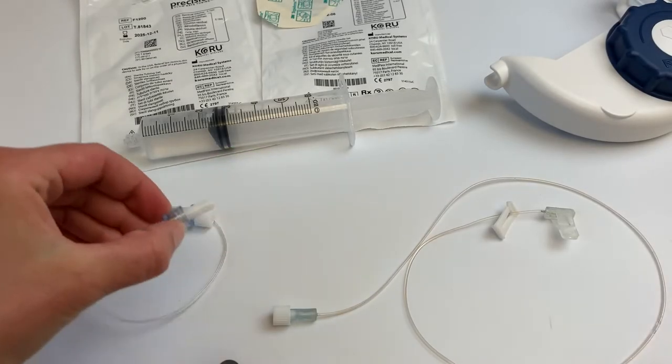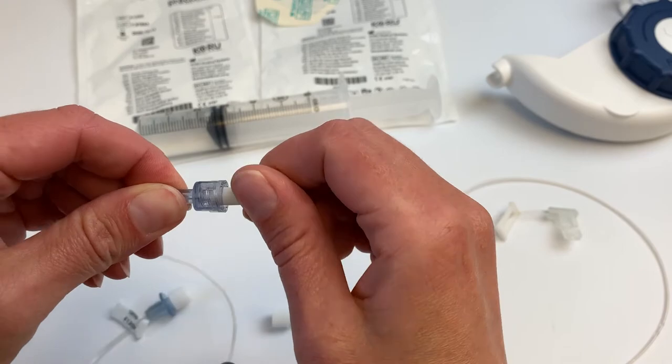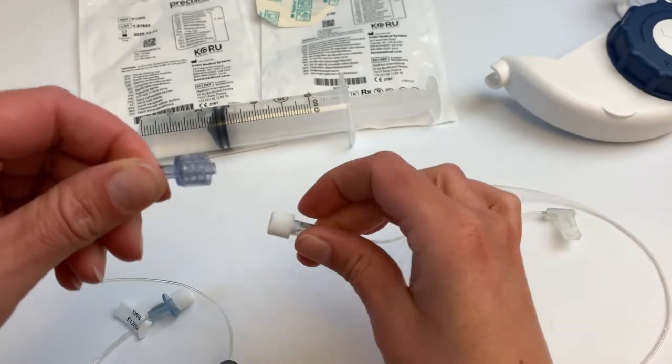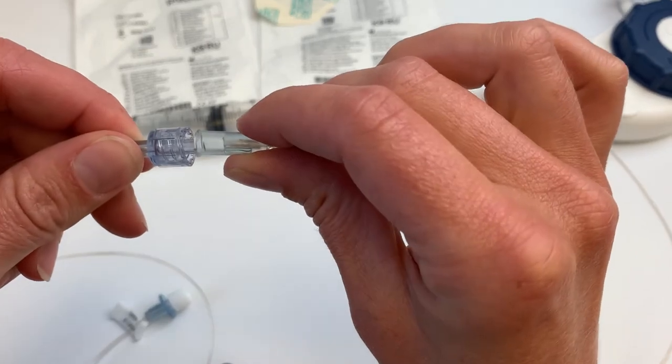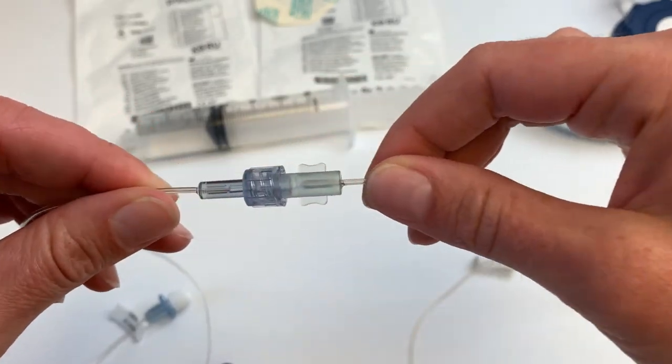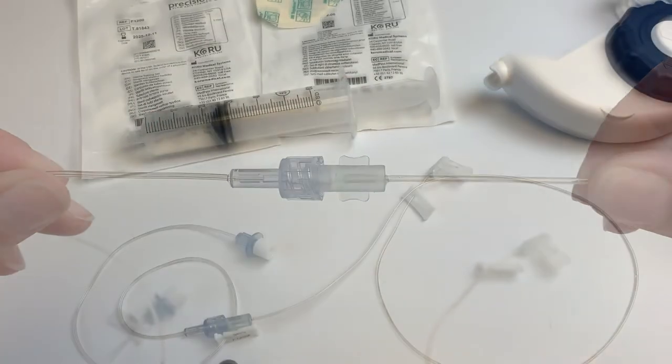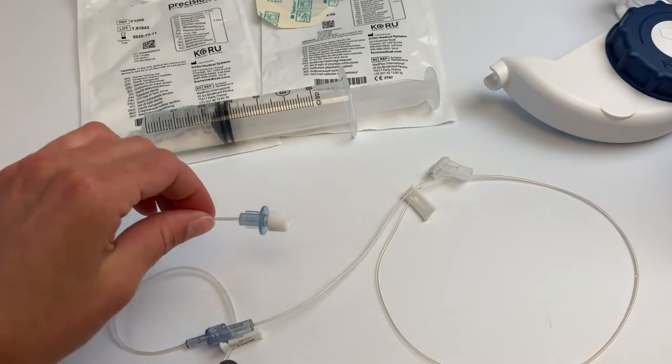Once your medication syringe is prepared, you will attach the tubing and needle sets. To do so, remove the sterile caps from the end of the precision flow rate tubing set and the high flow subcutaneous needle set and connect using care not to touch the connector ends.